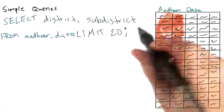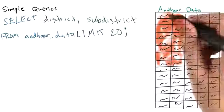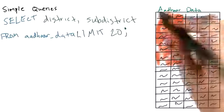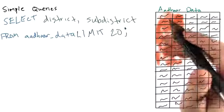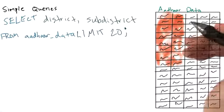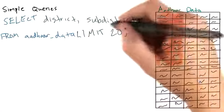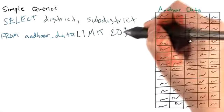Now, say we only wanted some of these columns, say district and subdistrict. We could just ask for those specific columns instead of star. For example, we might write SELECT district, subdistrict FROM aadhaar_data LIMIT 20.